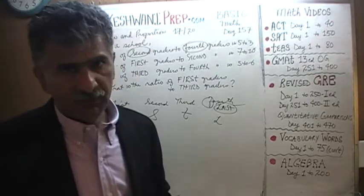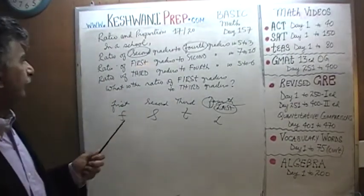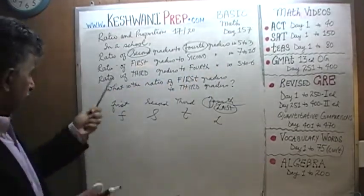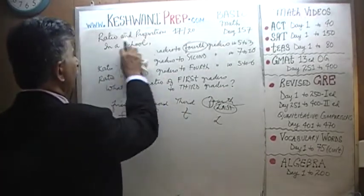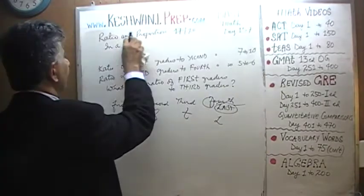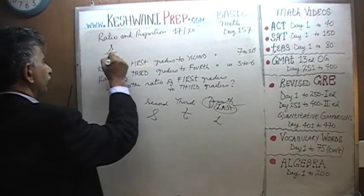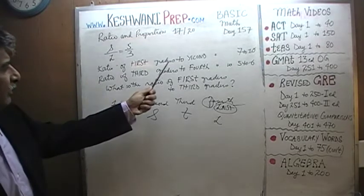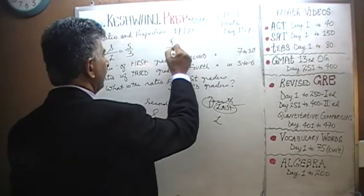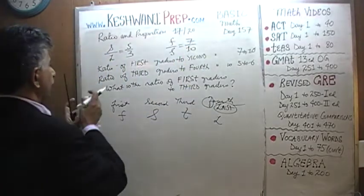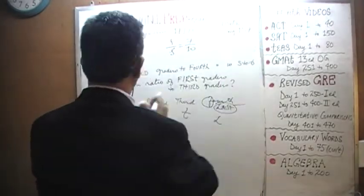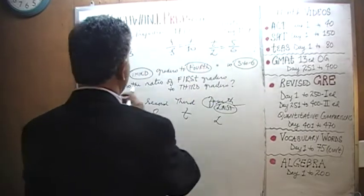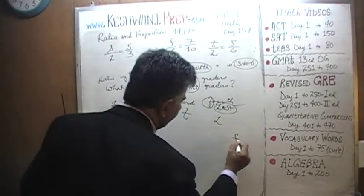Let's put down the information given to us. The first ratio: 2nd to 4th, which is S to L, is 5 to 3. The second ratio: 1st to 2nd, which is F to S, is 7 to 10. And finally, 3rd to 4th, which is T to L, is 5 to 6. What we want is F to T — the ratio of 1st to 3rd.